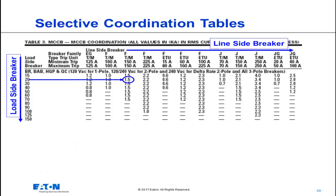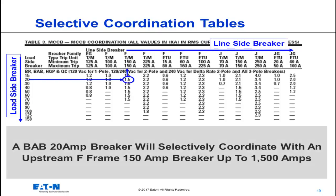For this example, an F-150 upstream of a BAB-20 will selectively coordinate up to 1,500 amps. Beyond 1,500 amps, both of these devices will open. Currents less than or equal to 1,500 amps will see the BAB-20 open and the F-150 keeping its contacts closed.